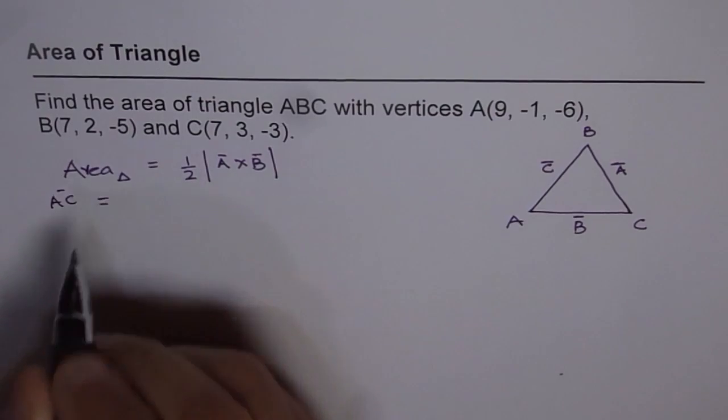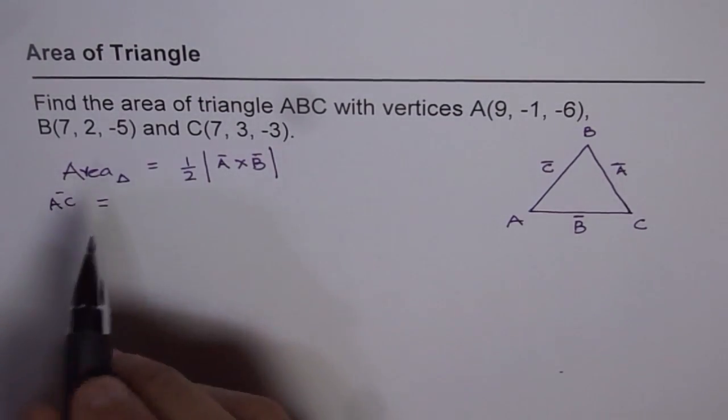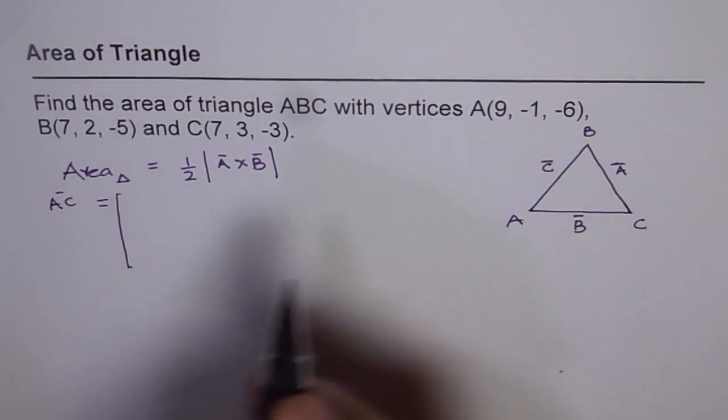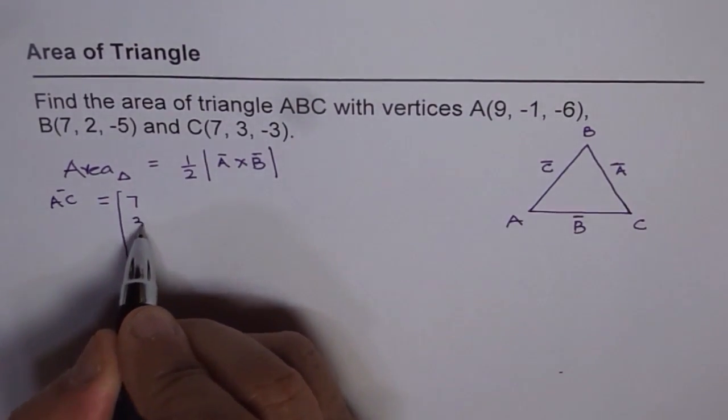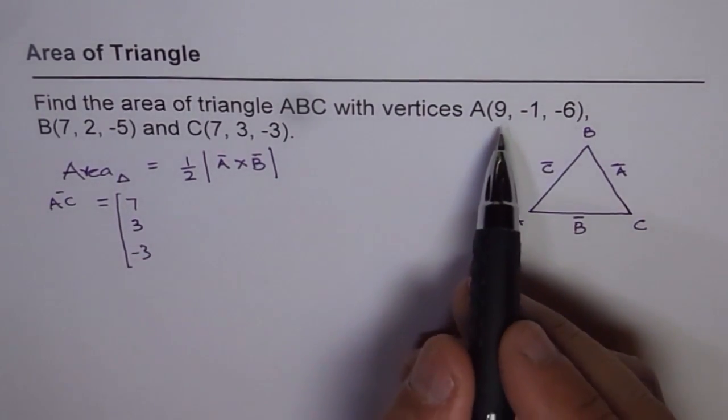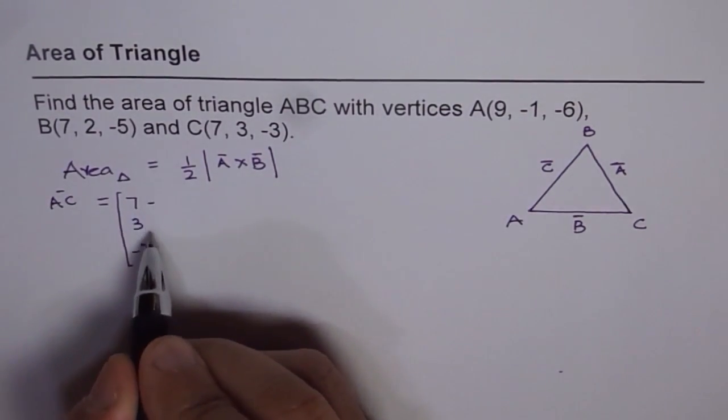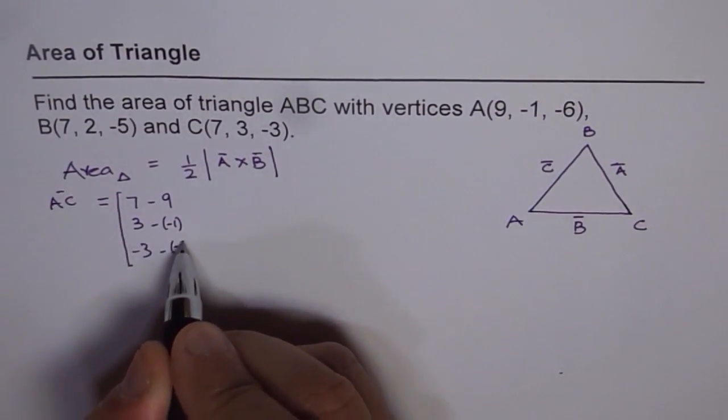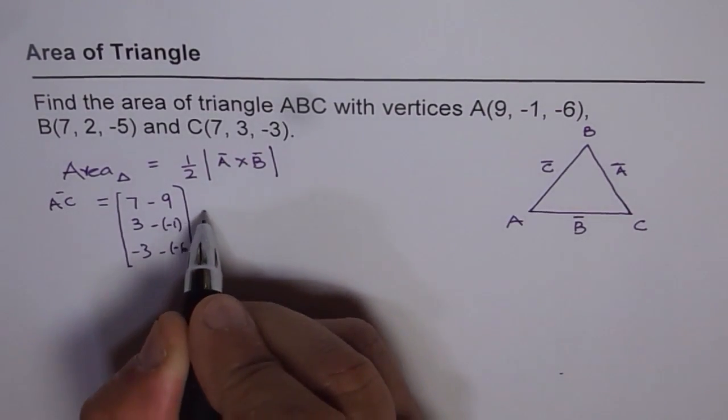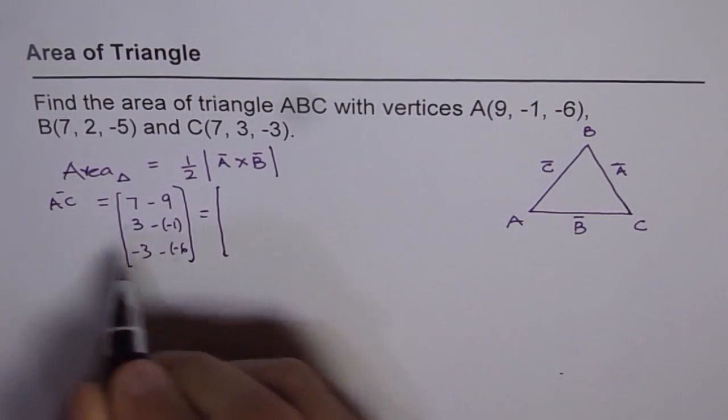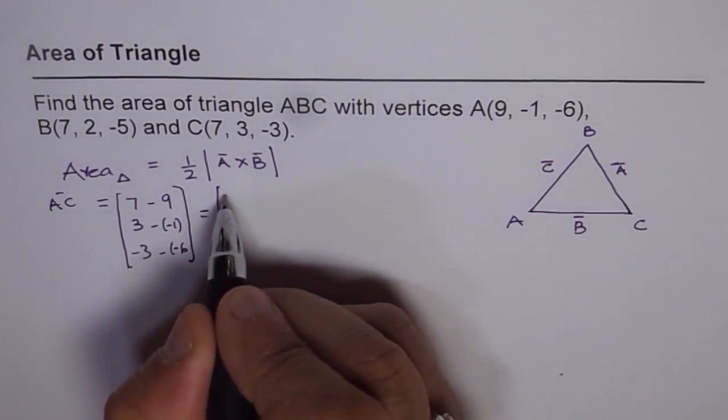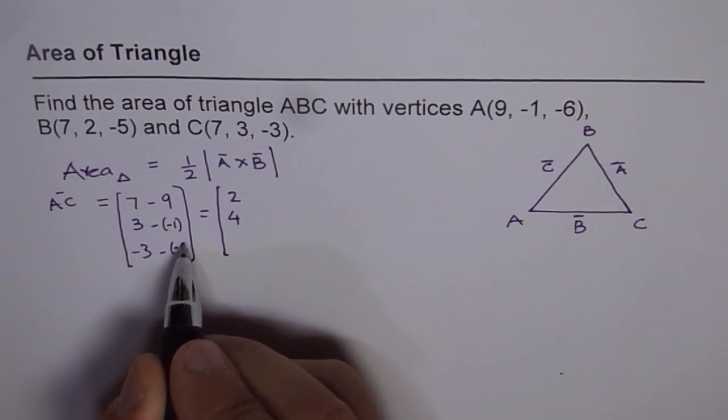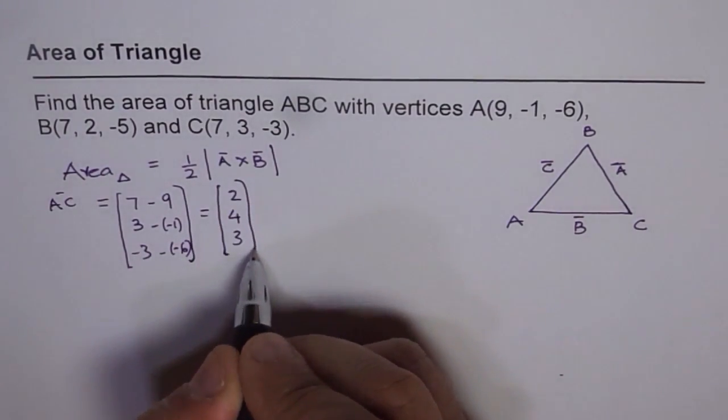AC is equal to, A is here and C is there. So I will use matrix here. So AC, C minus A. So write 7, 3, -3. And A is 9, -1. So we will take away those, which is 9, -1, and -6. And that gives us AC, which is 7 minus 9 = -2, 3 plus 1 = 4, and -3 plus 6 gives us 3. So we get AC.